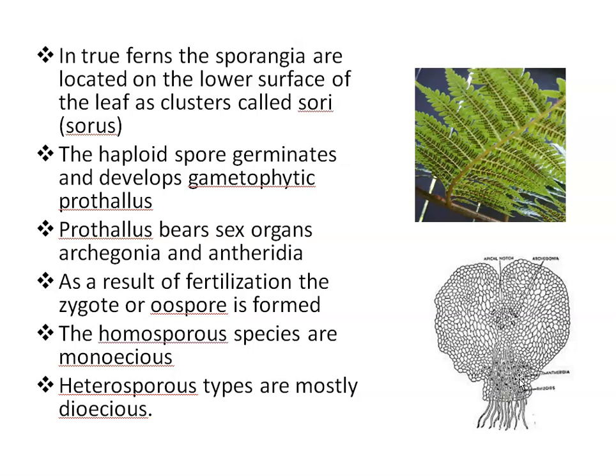The sex organs are embedded or projected in the prothallus. The male gamete is called antherozoid and is produced inside the antheridium. Antherozoids are unicellular, spirally coiled, and flagellate. Archegonium is differentiated into an upper neck and lower venter part. The archegonium neck is projected and venter is embedded in the prothallus. Water is essential for fertilization. When antherozoids fuse with the egg, they form a diploid zygote.